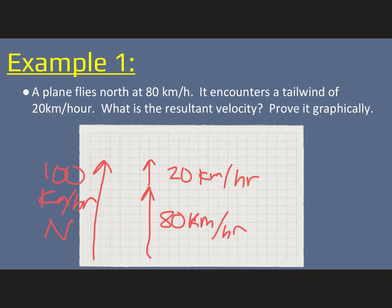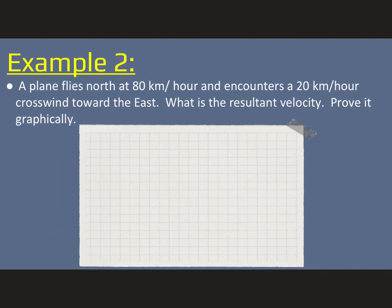No need for a degree if it's straight north, south, east, or west. Now, this example is a little different. If I'm flying north at 80 kilometers per hour, and I have a crosswind that's 20 kilometers east, that's going to be a different velocity.